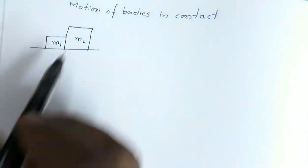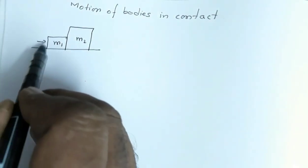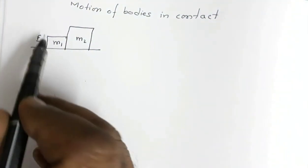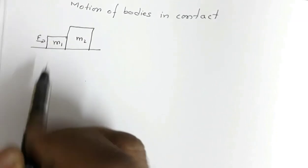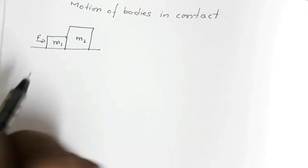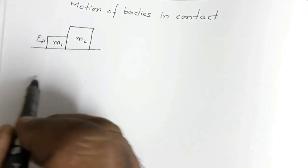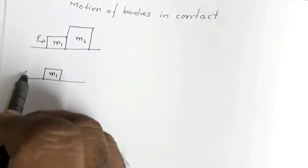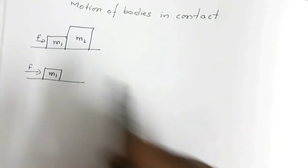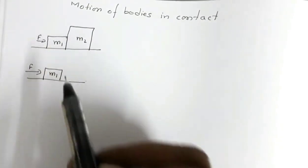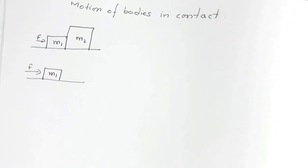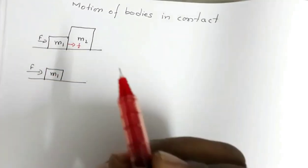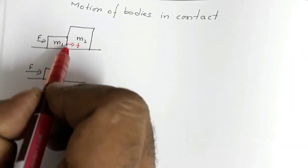Suppose the force acting on this block is capital F — that is the external force acting on the block of mass m1. Now if I draw the two blocks separately, this block of mass m1 is acted upon by force F. Since m1 is in contact with m2, m1 will exert a force small f on m2.